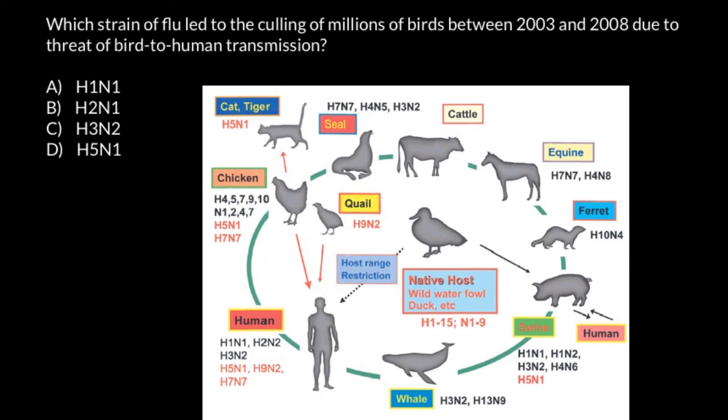According to this picture, for example, for the hemagglutinin there are 50 different variants we can find, and for the neuraminidase 9 different variants.